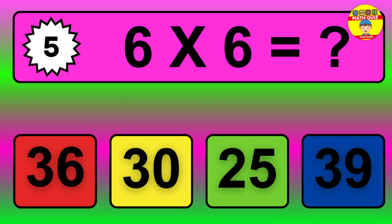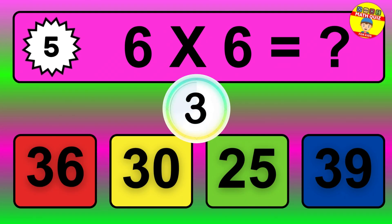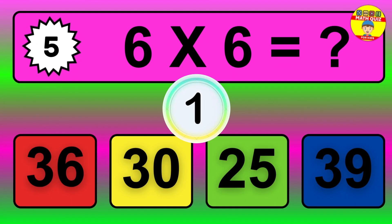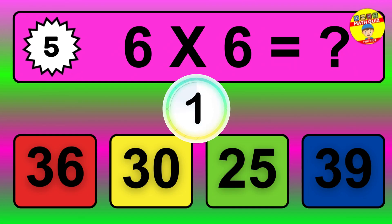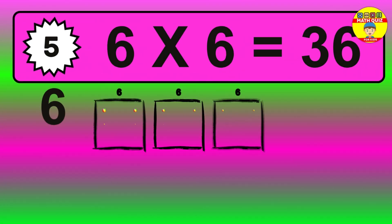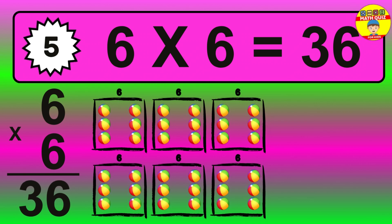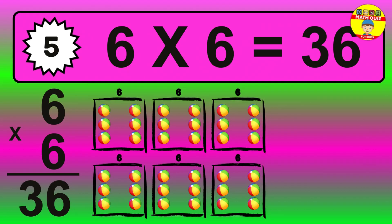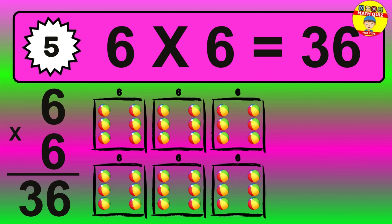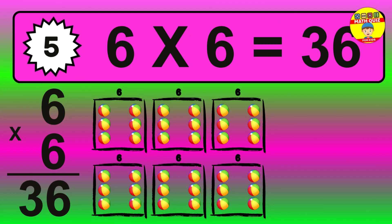Question 5. 6 times 6 equals what? The answer is 6 times 6 is 36. To calculate, we have 6 groups with 6 balls each one. So, how many balls do we have?